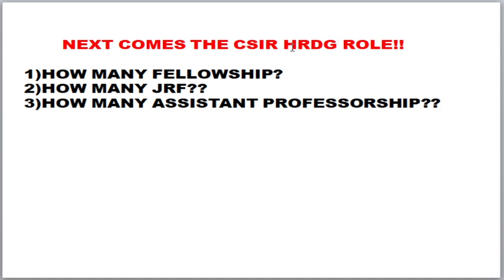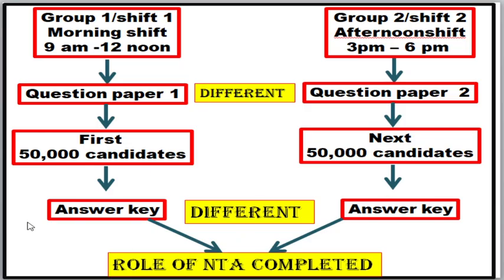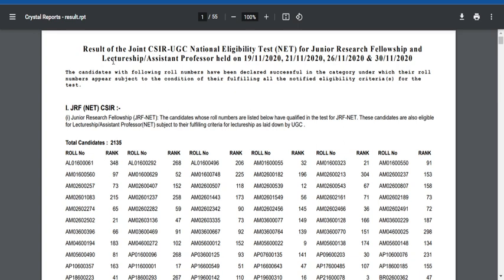Then comes the role of CSIR HRDG. CSIR HRDG will analyze the total amount of fellowship that can be awarded, which depends on candidate performance, difficulty level of the question paper, and funds allotted by the government. CSIR takes responsibility for analyzing how many fellowships can be distributed and how many JRFs and assistant professorships to award — everything is under the control of CSIR HRDG. In 2020, the exam was also conducted in two shifts, but the amount of JRF given was a single unified figure. After releasing the result, there was no separate mention of shift 1 or shift 2.